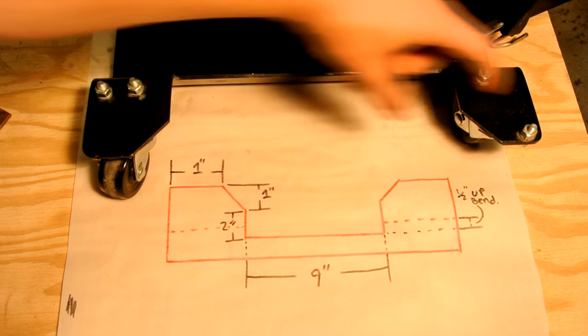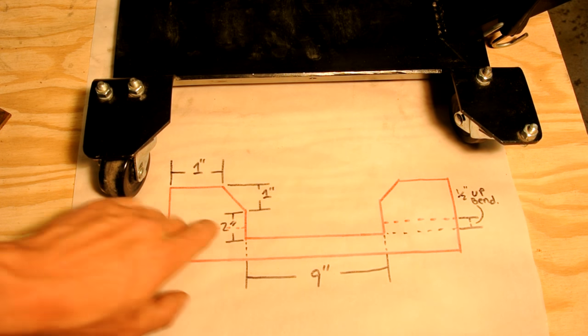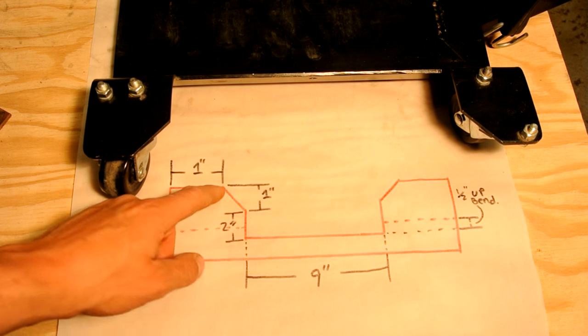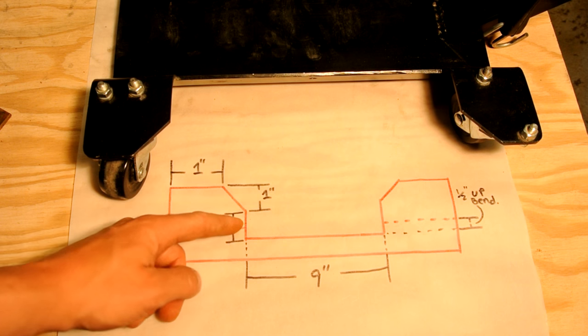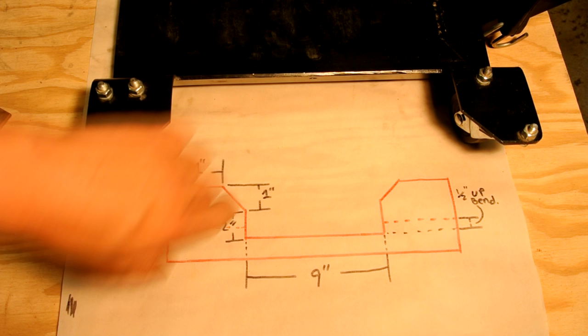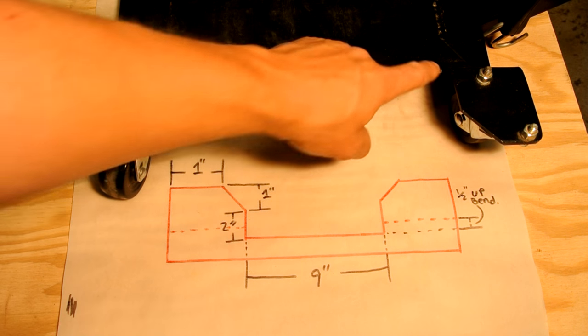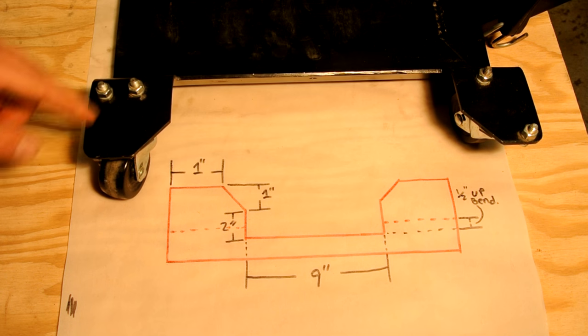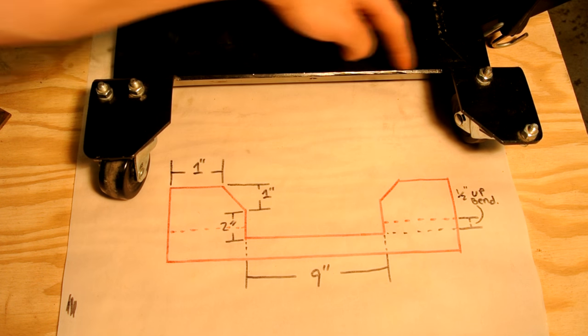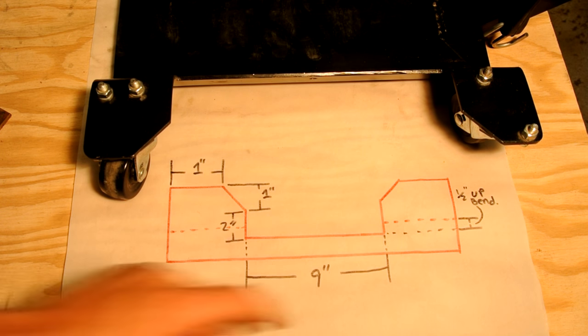So for the outside pieces, I have 1 inch and then I've came down another inch and that's where I 45'd it. I just made a mark there and mark there an inch down and cut that. These sides are 2 inches long. And that's this right here. And then I've gone 9 inches wide and I've basically mirrored the other side.